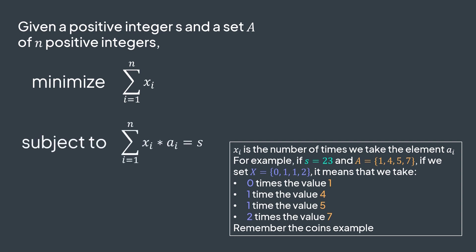While respecting the constraint, that the sum of elements we take, multiplied by their number of occurrences, is equal to the integer s. For example, with coins, if we sum the product of each coin value in the number of times we took it, we have to exactly get the amount of money we want to make, which is the case here.